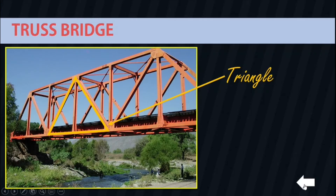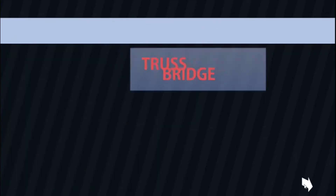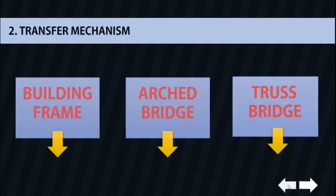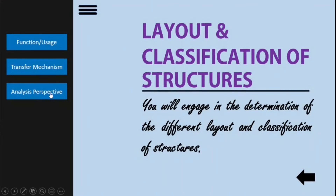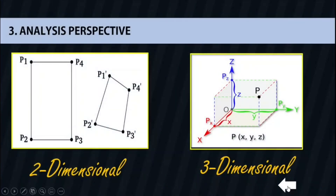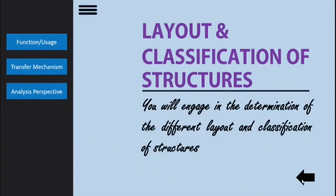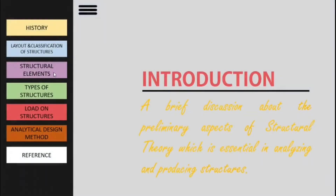The third classification is the analysis perspective. Here you can analyze structures in a two-dimensional or three-dimensional perspective. We are done with our two topics. Let's go to our third one, which is structural elements.